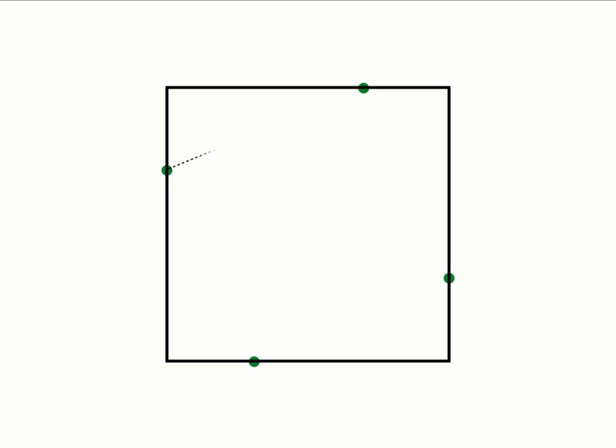Next, connect the points with a dashed line. When you do this, you get a square with an inner square.